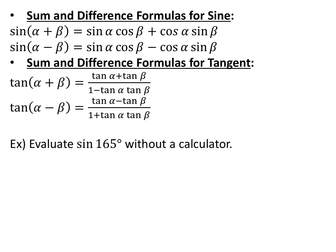We also have sum and difference formulas for sine and tangent. For cosine, it's the same trig function with the opposite sign. For sine, it's the same sign but opposite trig function: sine of alpha plus beta equals sine alpha cosine beta plus cosine alpha sine beta, and sine of alpha minus beta equals sine alpha cosine beta minus cosine alpha sine beta. For tangent: tangent of alpha plus beta equals (tangent alpha plus tangent beta) over (1 minus tangent alpha times tangent beta), with signs flipped for the difference. If you don't have the tangent formula memorized, you can always evaluate it as sine divided by cosine.